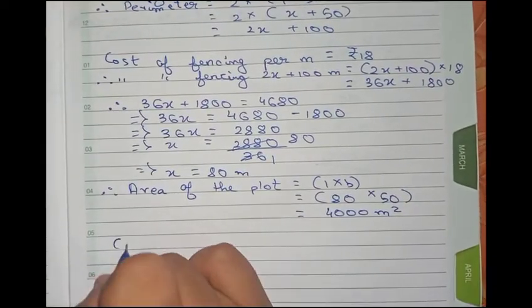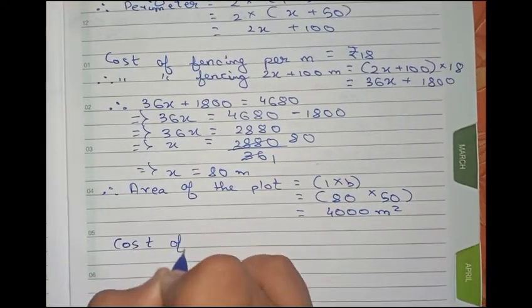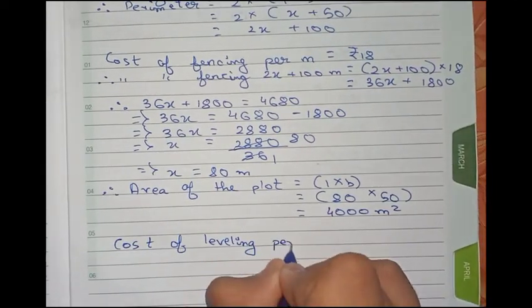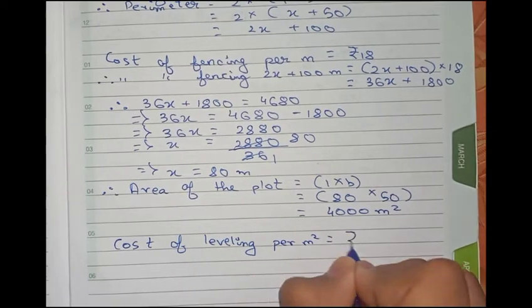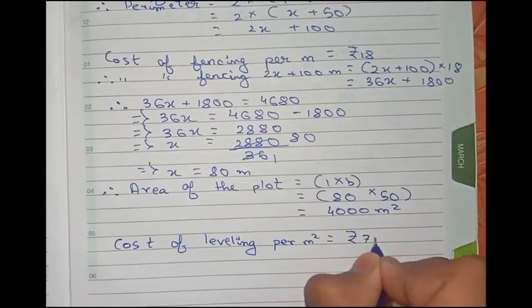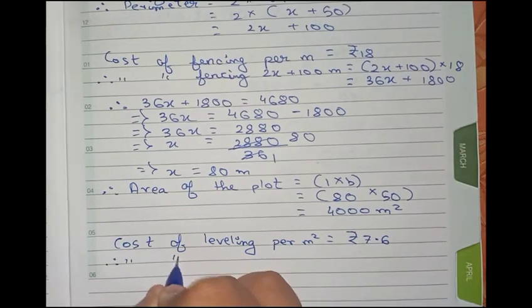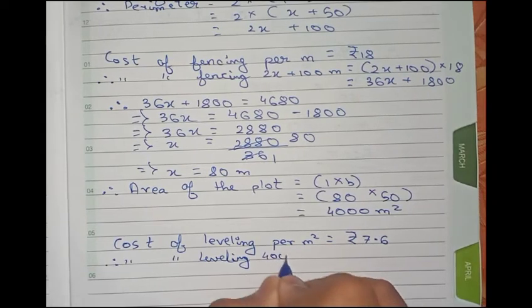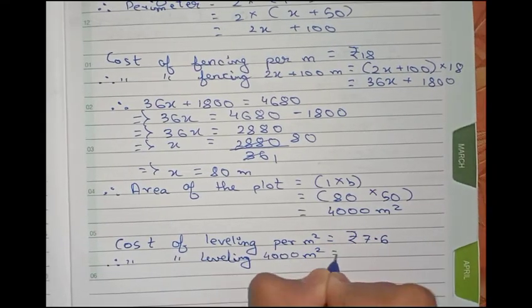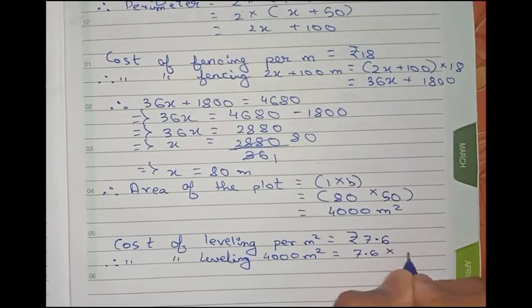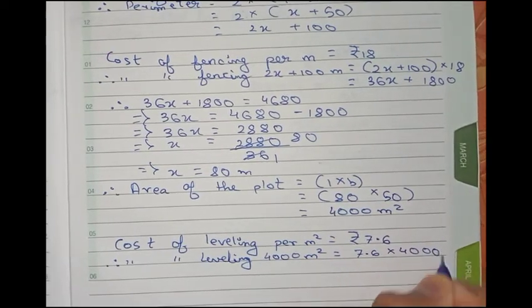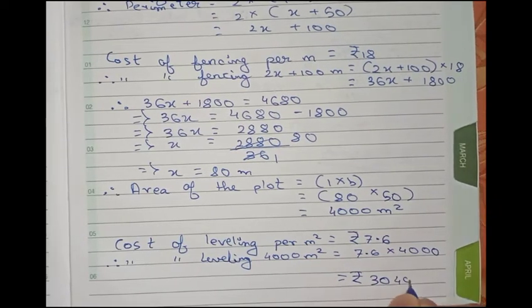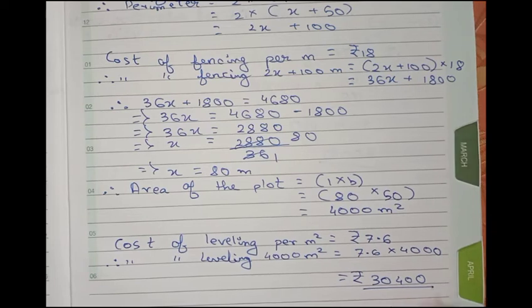Now to find cost of leveling per meter square, it is equal to 7.6 rupees as given. Therefore, cost of leveling 4000 meter square will be 7.6 times 4000, which equals rupees 30,400. So this is our final answer for this question.